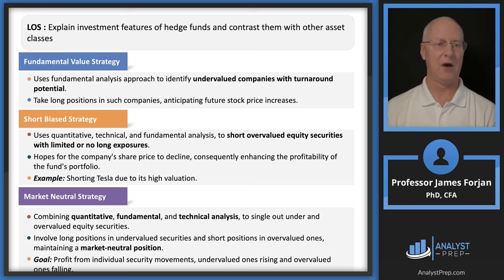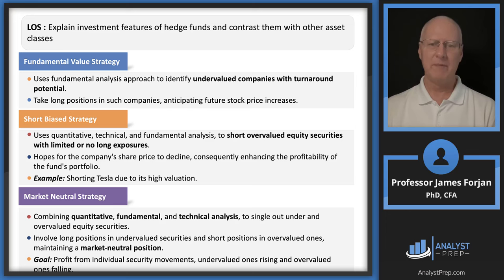Short bias strategy: maybe you have 3 long positions and 13 short positions — a short-biased strategy means you're heavily weighted toward shorting stocks, but you can still have some long positions. Market neutral strategy: think of shorting a stock with a beta of one and going long a stock with a beta of one — you get a minus-one beta and a plus-one beta, so your market beta would be zero. Hence the claim of being market neutral.